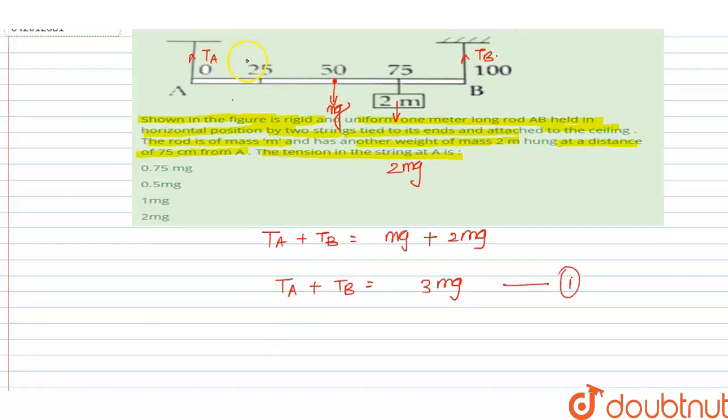Since in this question external force is absent, we can write summation of moment equals 0. Then find the moment along point A.